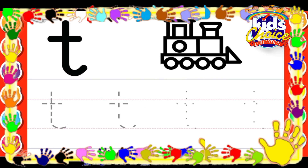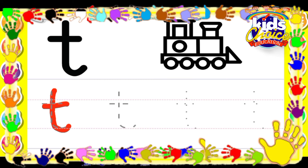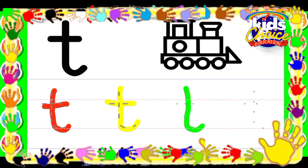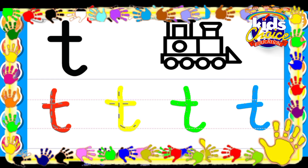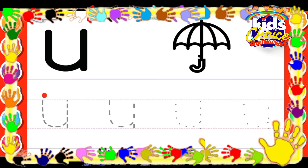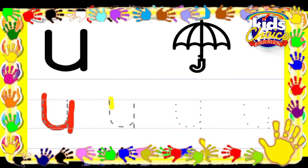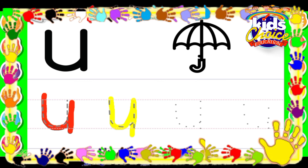T for Train. U for Umbrella. Yellow. Green. Blue.